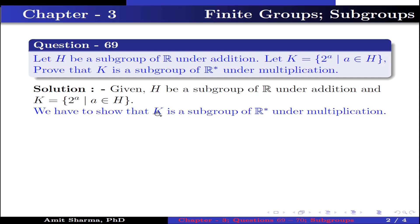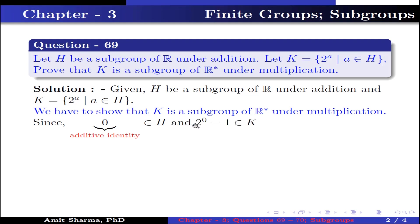We have to show that k is a subgroup of ℝ* under multiplication. Since 0 belongs to h, where 0 is the additive identity, and 2 to the power 0, which equals 1, belongs to k, this implies k is not equal to the empty set.